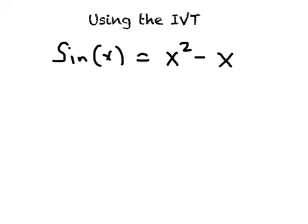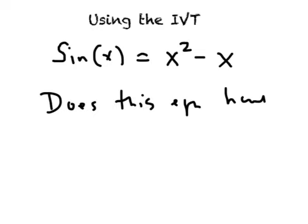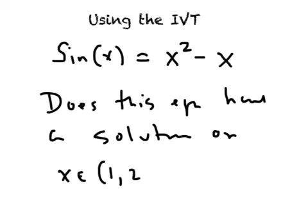It's like problem 42 from section 1.5. The problem is, if we're given the equation sine of x equals x squared minus x, the question is, does this equation have a solution on the interval for x between 1 and 2?